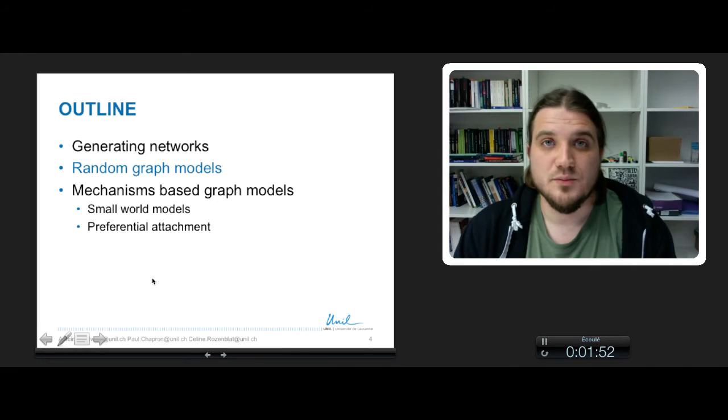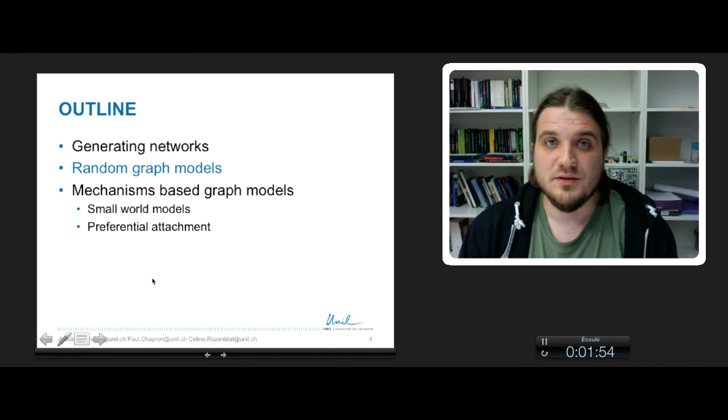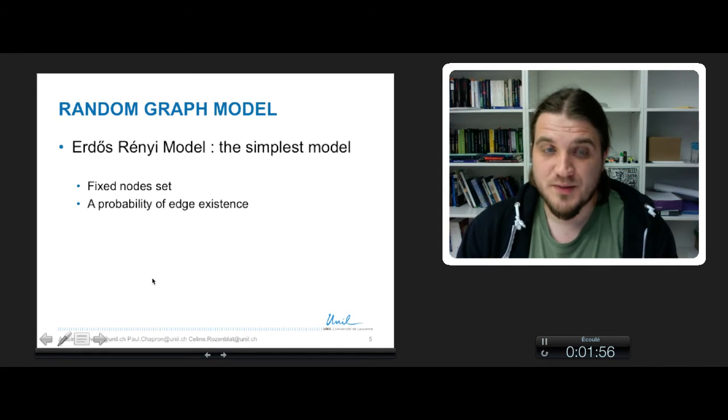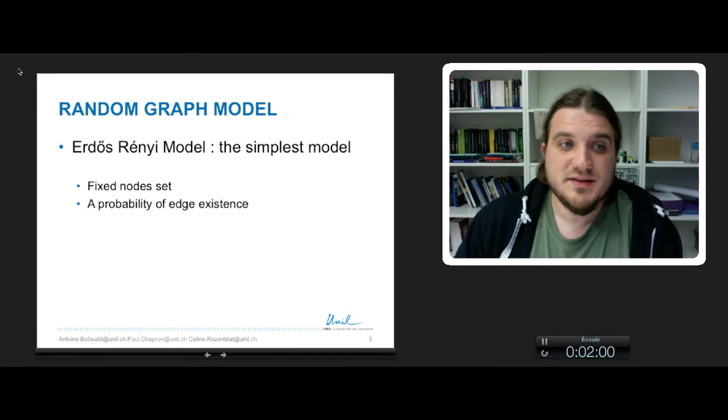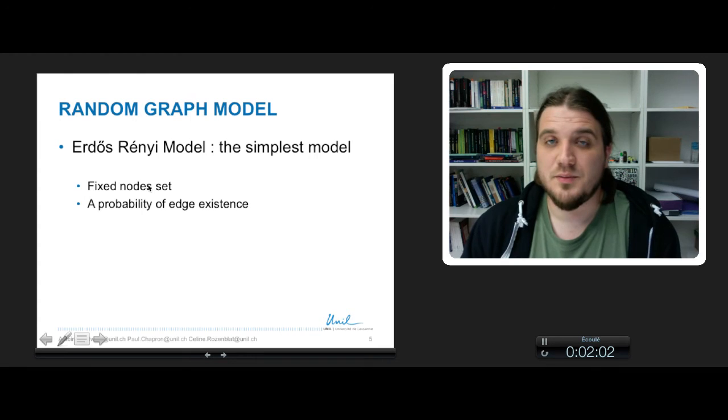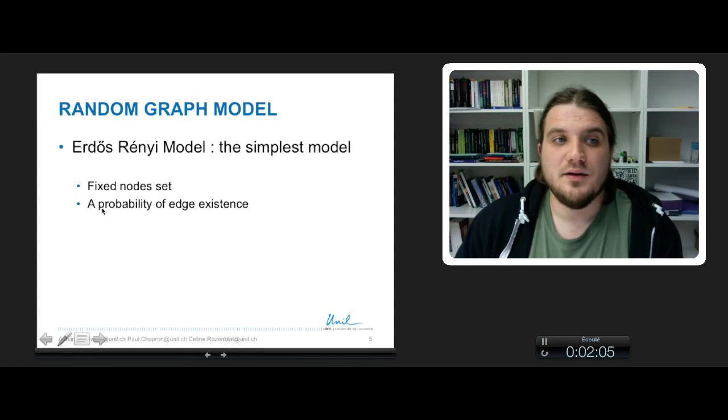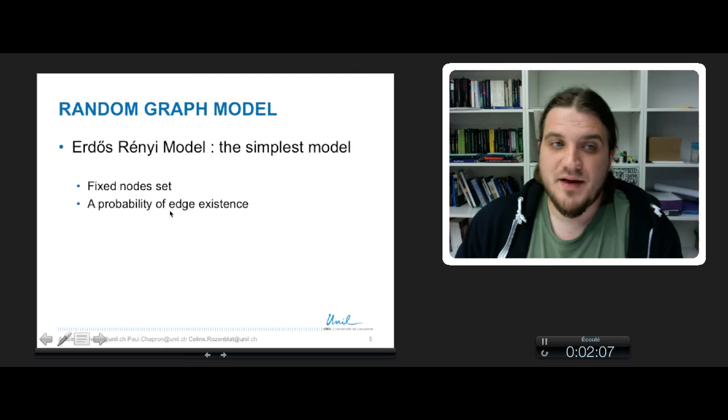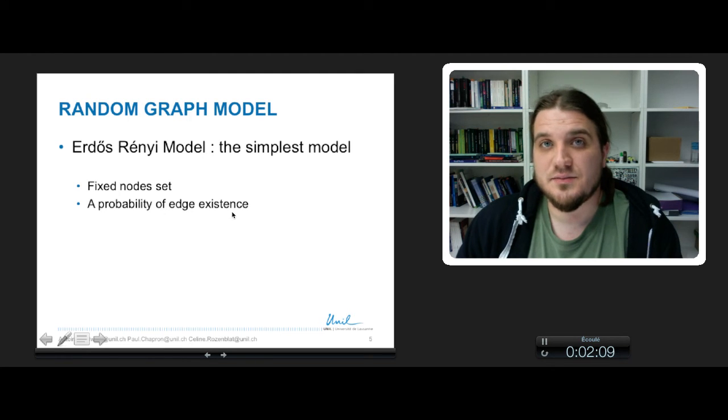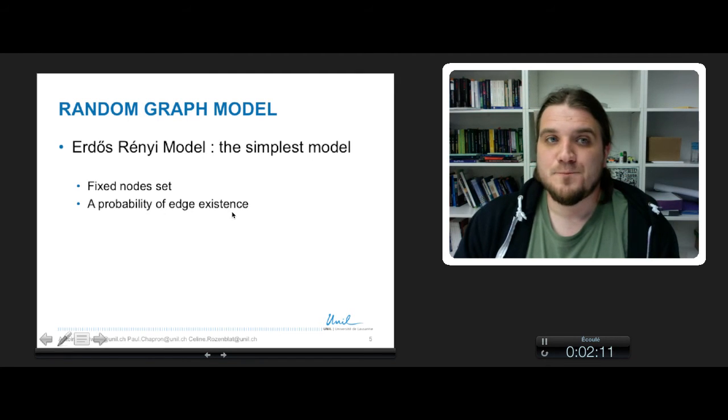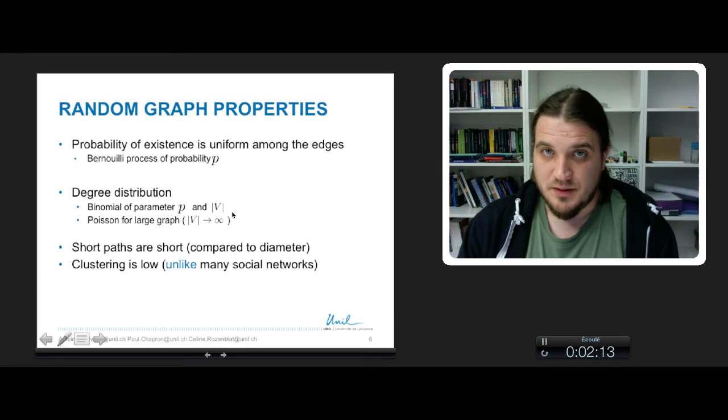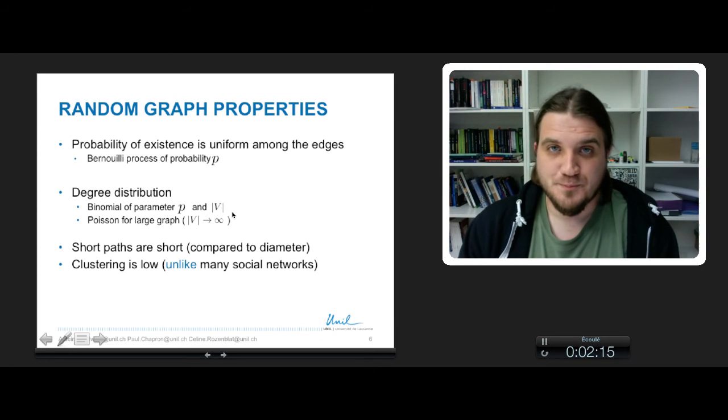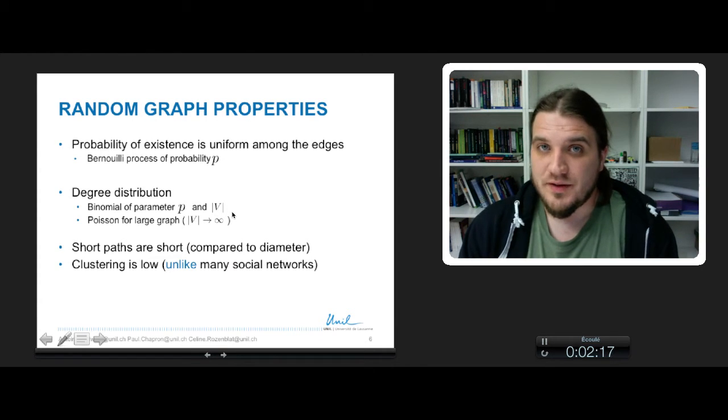We start with the most simple model, called the Erdos-Renyi model. This is a very simple model with a fixed node set, so the number of nodes is constant, and a defined probability of edge existence. So this leads to some interesting properties that can be shown analytically.